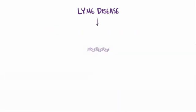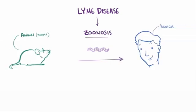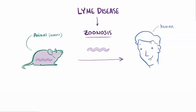Lyme disease is classified as a zoonosis, meaning it's spread to humans from animals that exist as natural reservoirs — reservoir meaning that the bacteria typically doesn't cause serious disease to the animal. Borrelia species can infect a wide range of animals, including small animals like mice, lizards, and birds.